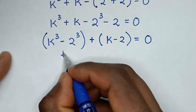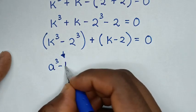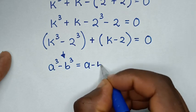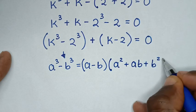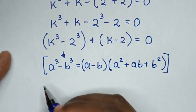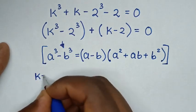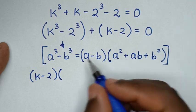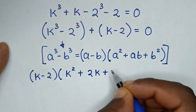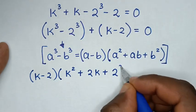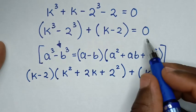From this part here, it is in the form of difference of two cubes, so we apply the rule: a power 3 minus b power 3 equals a minus b, bracket, times a squared plus ab plus b squared, bracket. Applying this form: a minus b gives k minus 2, so k minus 2, bracket, times a squared which is k squared, plus ab which is k times 2 equals 2k, plus b squared which is 2 squared, bracket, then plus bracket k minus 2, bracket equals 0.